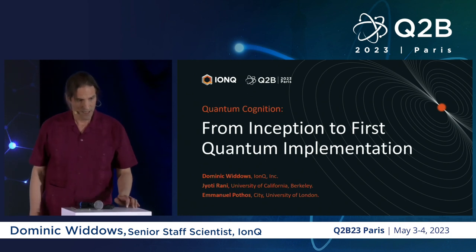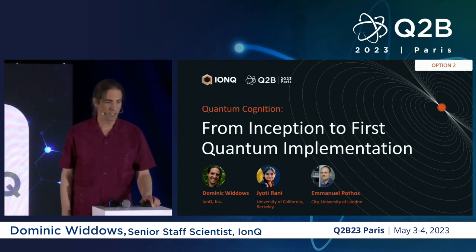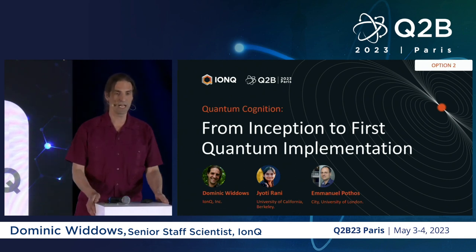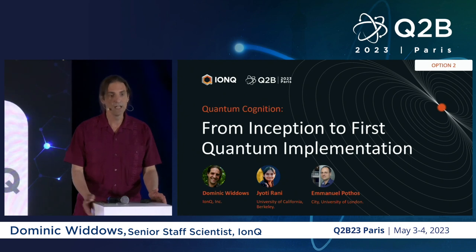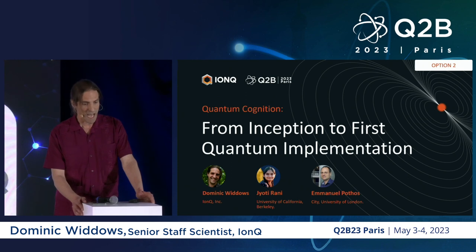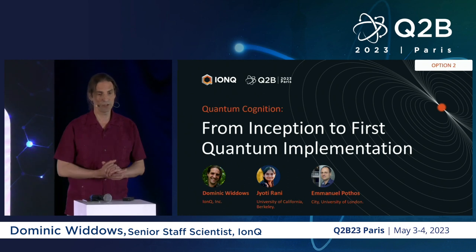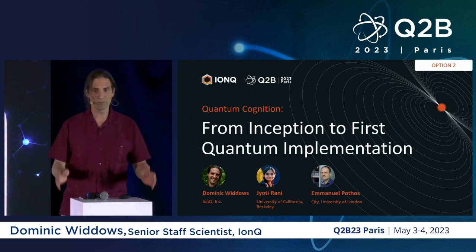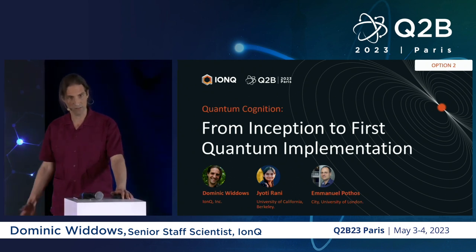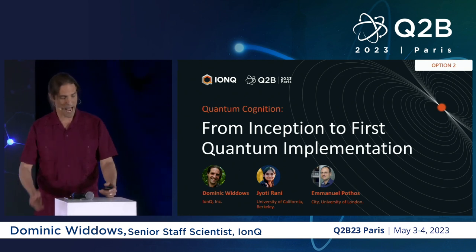It's joint work between myself at IonQ, Gioti Rani who is an undergraduate student at the University of California Berkeley who really started this work as an internship last year, and Emmanuel Pothos who is a psychology professor at the University of London. We've been friends and doing joint work with common interests for some years, and we're really excited to see how this is coming together.